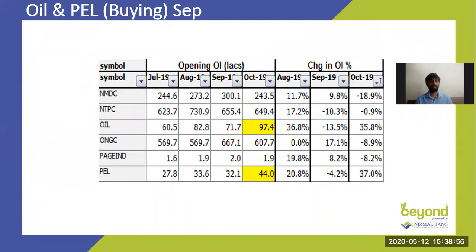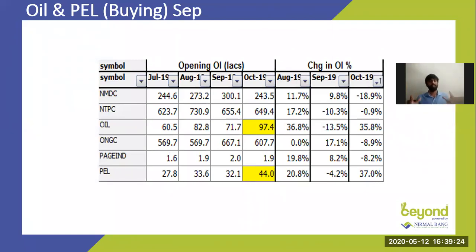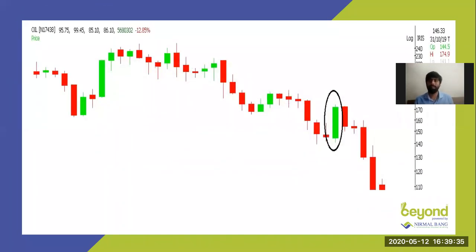We have data from July 2019 to October 2019 — oil consistently had 70 odd lakh shares on the first day of expiry. In October 2019, suddenly 97 lakh shares rose up. The peculiarity was that oil was continuously going down — low top, lower bottom — and suddenly there's a high open interest spike. That means short covering was happening. Looking at the chart: from 140 odd levels, it really shot up to 180 — a 20% rise in one month. You could have very easily picked oil from these rollover numbers.